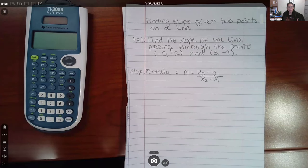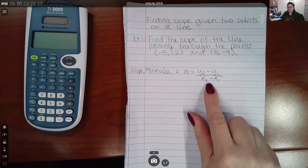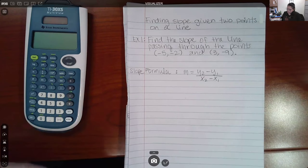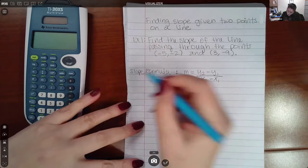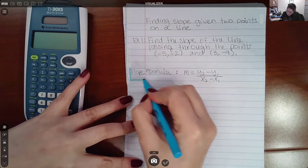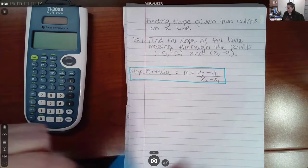The slope formula, or the formula that we're going to use to calculate the slope, is this formula here. So once you know this slope formula, you should be able to use it to find the slope between two points.